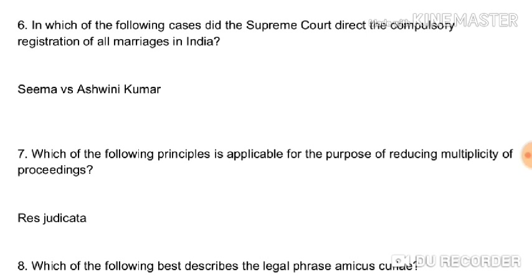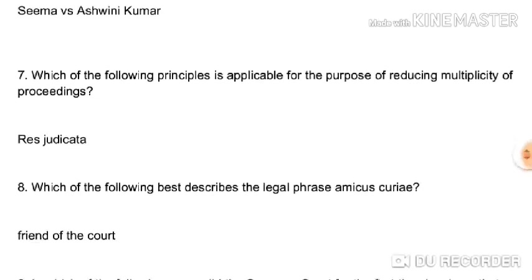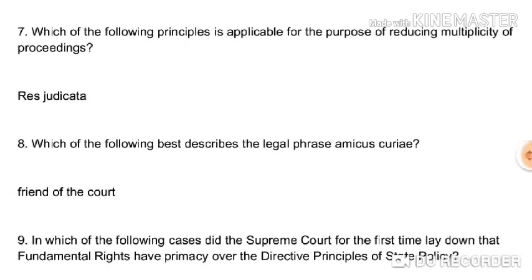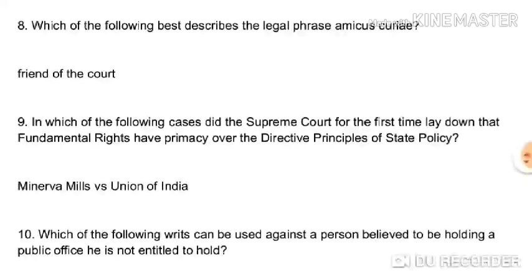Seema versus Ashwini Kumar will definitely come in your exam. Which principle is applicable for the purpose of reducing multiplicity of proceedings? Res judicata — the provision is under Section 11 of the Civil Procedure Code. Which of the following best describes the legal phrase amicus curiae? It means 'a friend of the court' — a person appointed by the court to assist it in facilitating the disposal of a case at a faster pace.